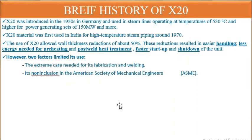A brief history of X20: it was introduced in the 1950s in Germany and used in steam lines operating at temperatures of 530°C and higher for power generating sets of 150 MW and more. X20 was first used in India for high-temperature steam piping around 1970. Its use allowed a wall thickness reduction of about 50%, resulting in easier handling, less energy needed for preheating and post-weld heat treatment, and faster startup and shutdown.